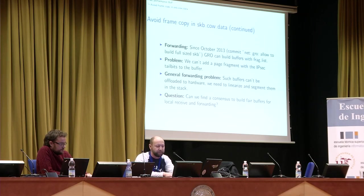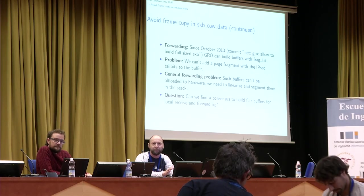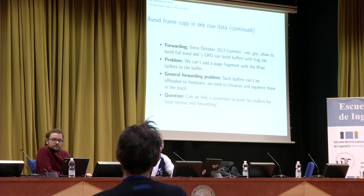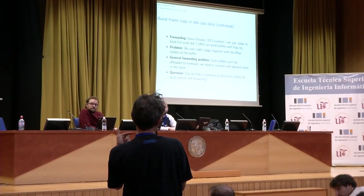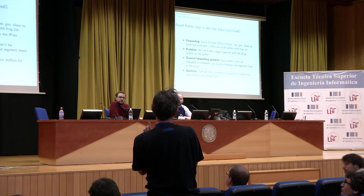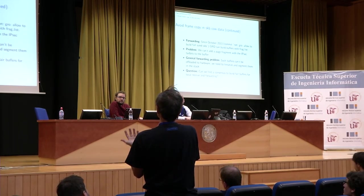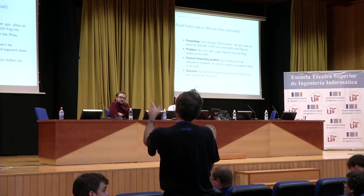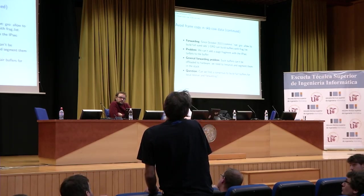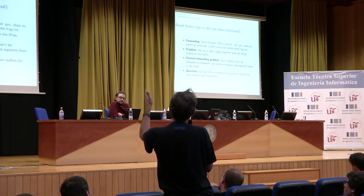The question is whether we can find a way to build fair buffers for local receive and forwarding. The relevant commit was done by Eric Dumazet, and I talked to him — he has some solutions proposed. He mentioned that a patch was merged to limit the number of frags in the TCP stack. The idea is to extend use of a sysctl in the GRO layer so you can limit the number of frags on the input path — if you want to limit to 10, just set the sysctl to 10. The default limit is 17, and normally frag lists should no longer be built by GRO.